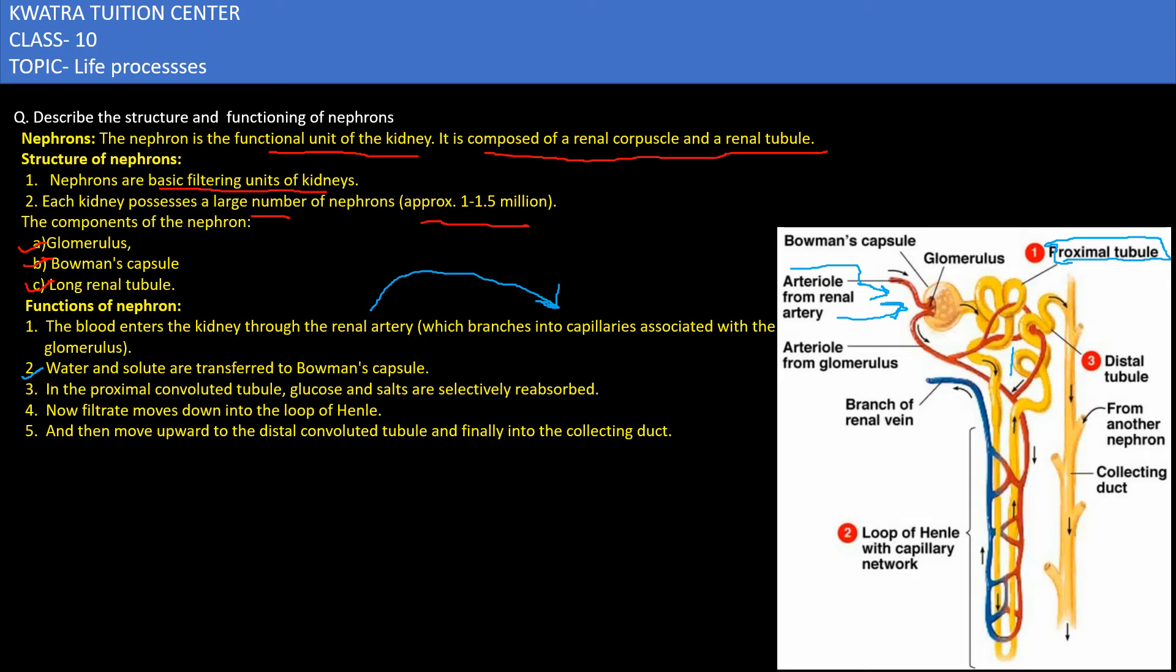Now the filtrate goes in the loop of Henle. It moves downwards in the loop of Henle. Then it moves upward from the loop of Henle and moves to the distal tubule.